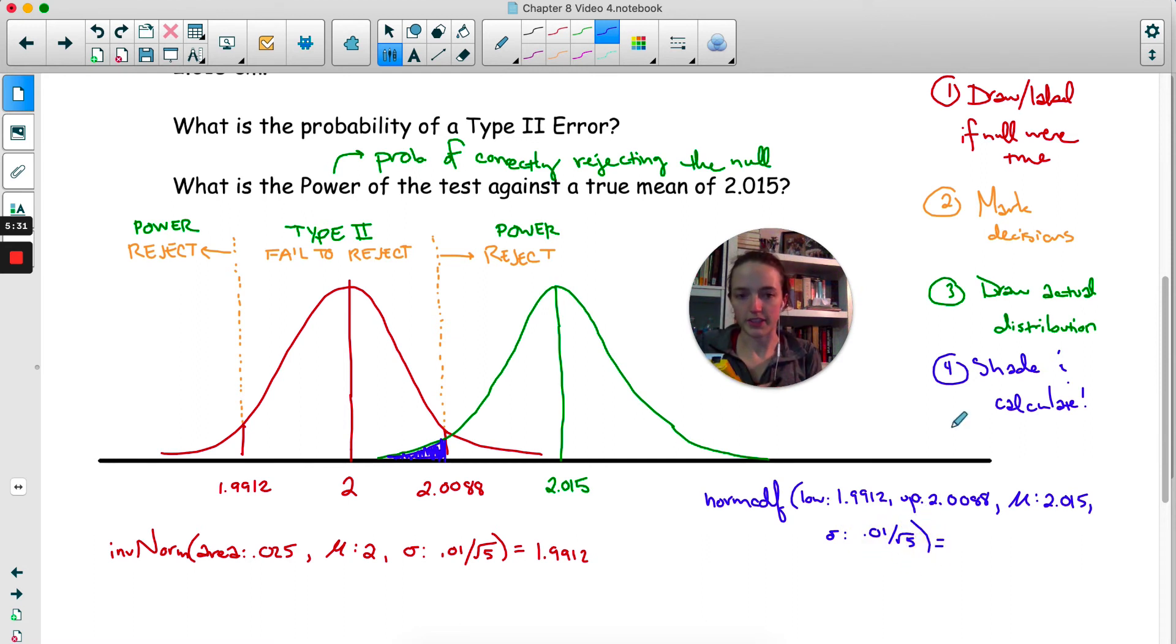So norm CDF, just let me type this all in. I've been making statistics videos for so long today. 0.083. That is the type 2 error, probability of a type 2 error.